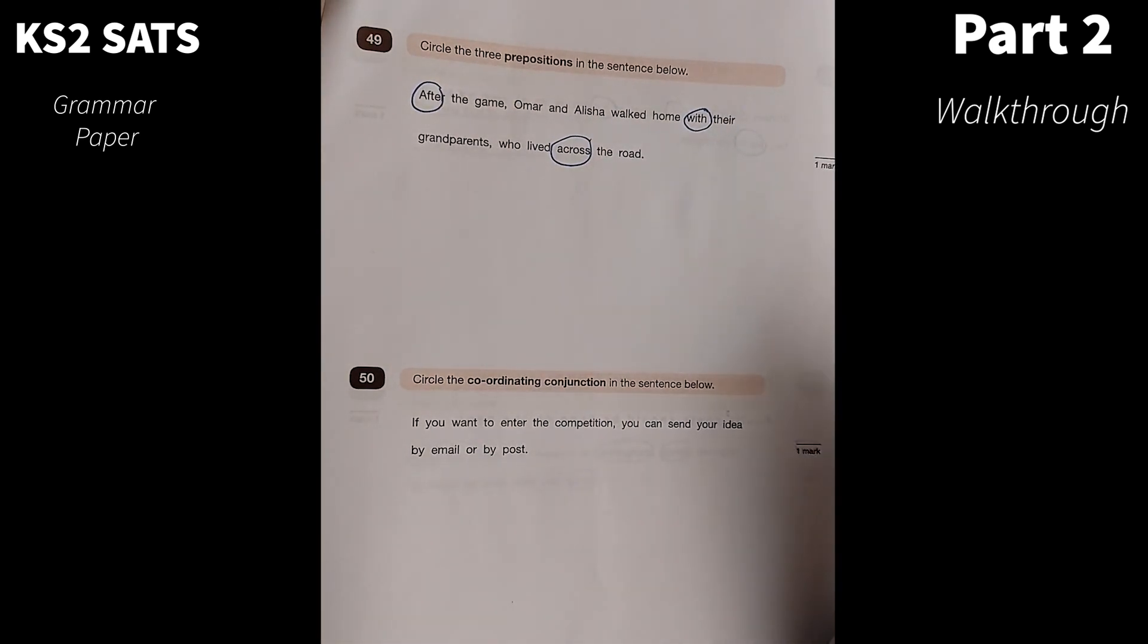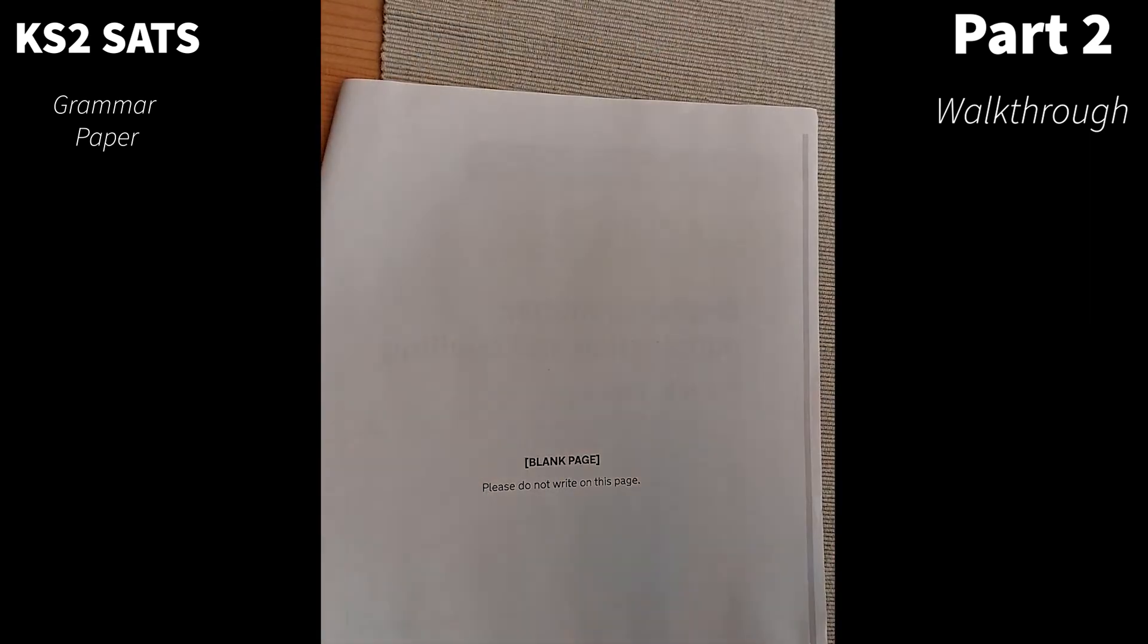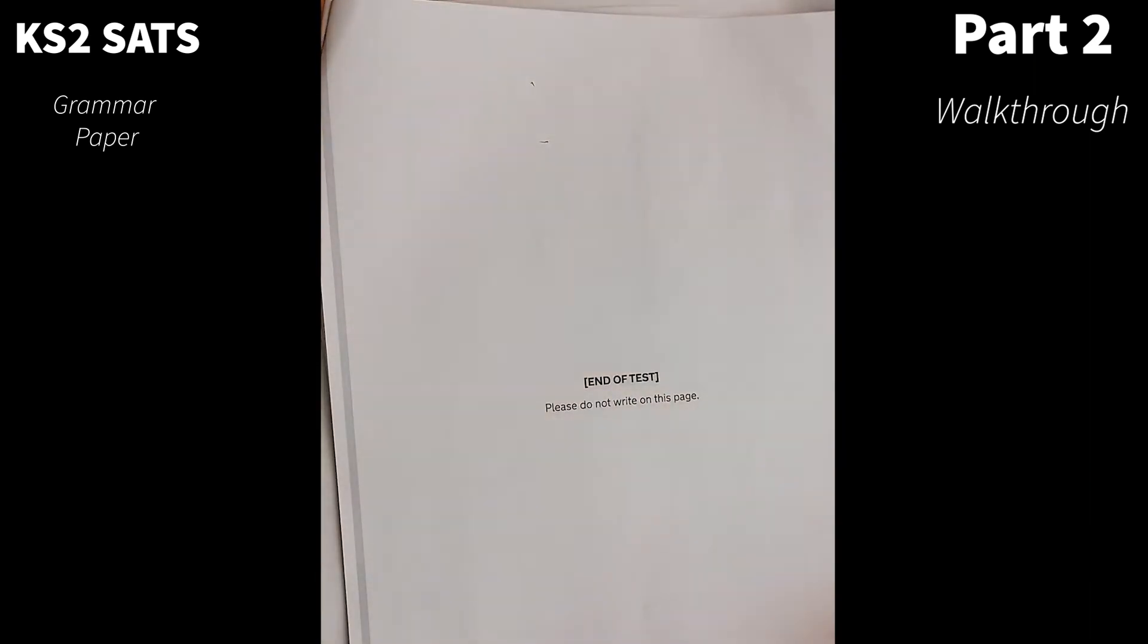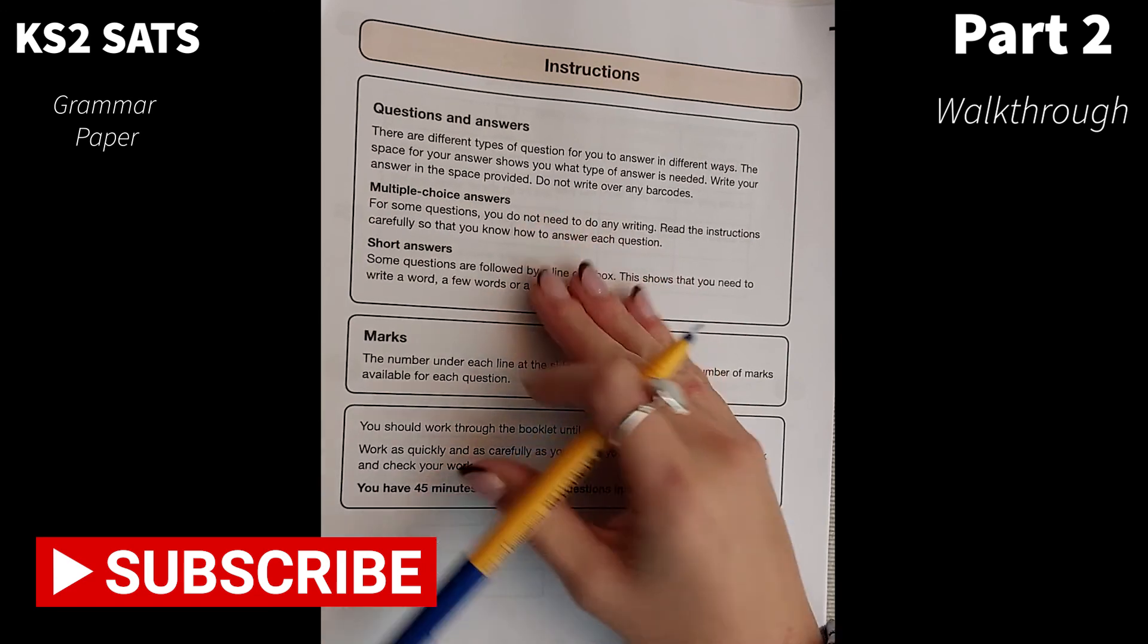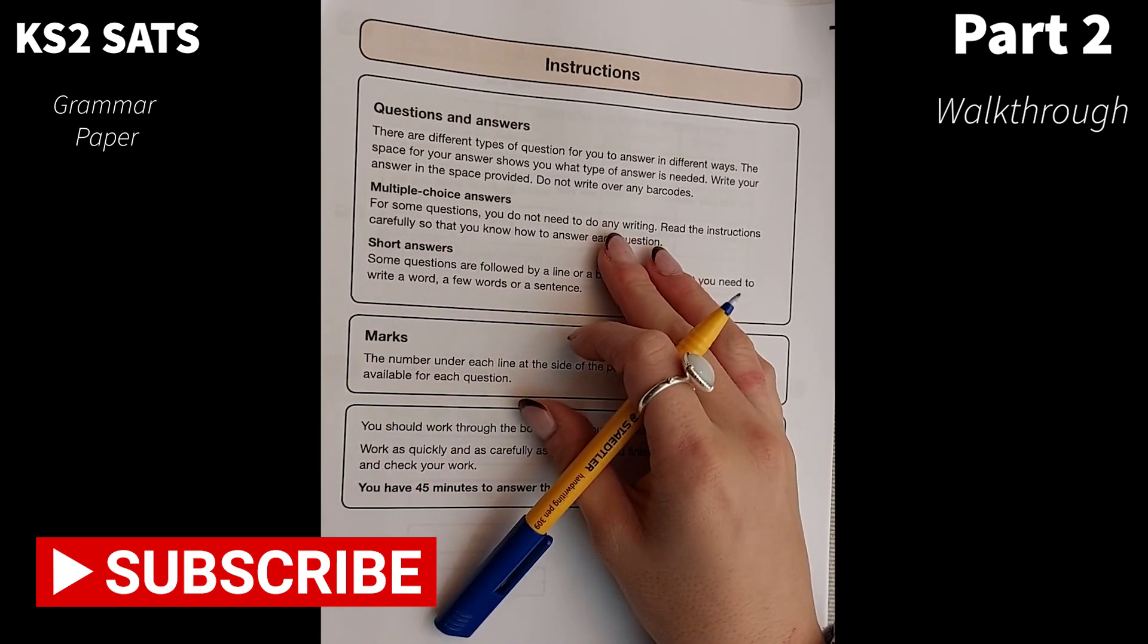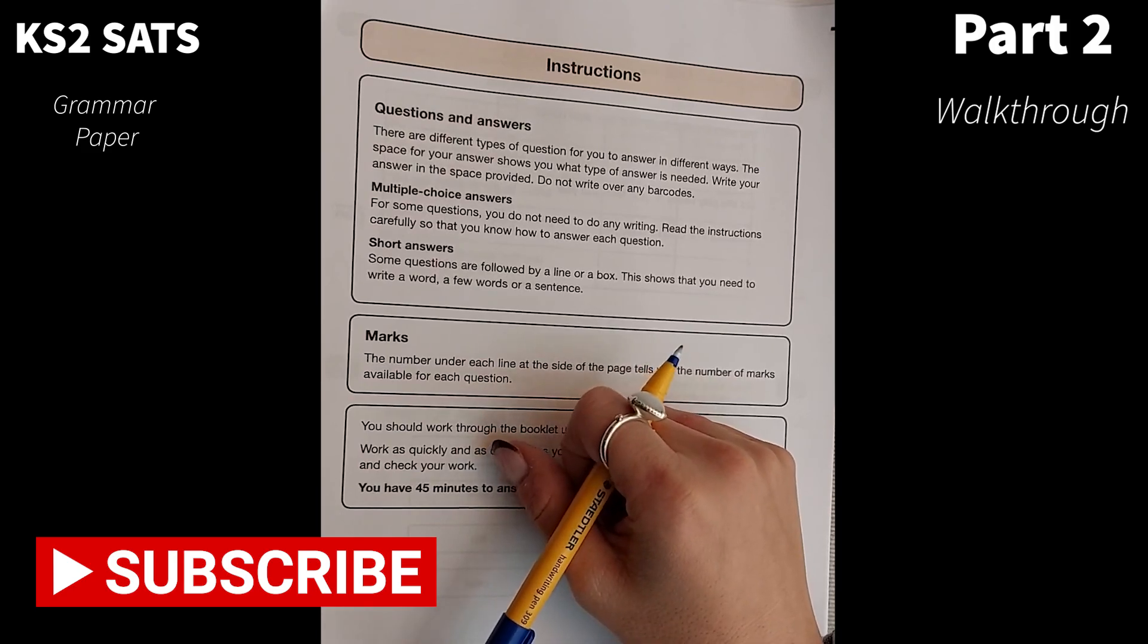Number 50. Circle the coordinating conjunction in the sentence below. If you want to enter the competition, you can send your idea by email or by post. So I know that or is my coordinating conjunction there. And there we have it. That's our last question in that paper. Now, I personally think that's a really reasonable paper. Let's hope that we get a similar one to that in 2022. Thanks for watching, everyone.